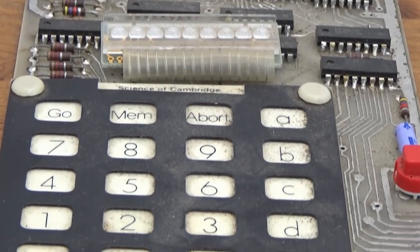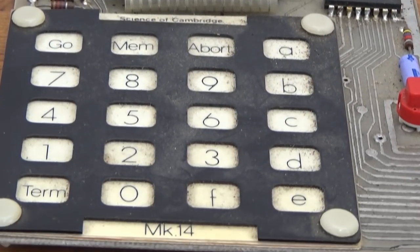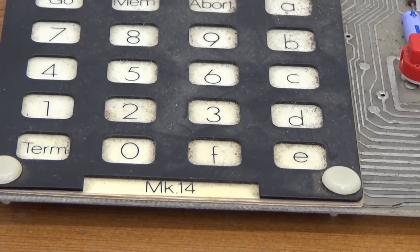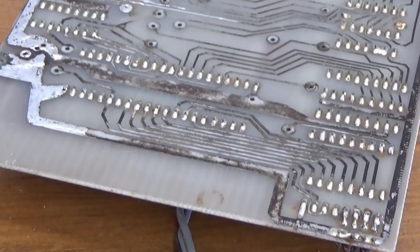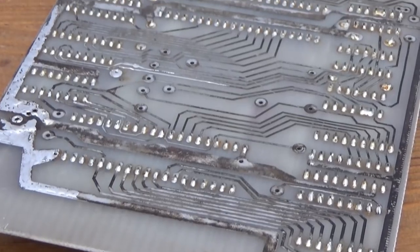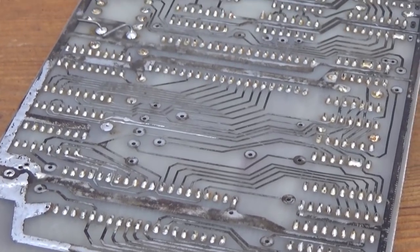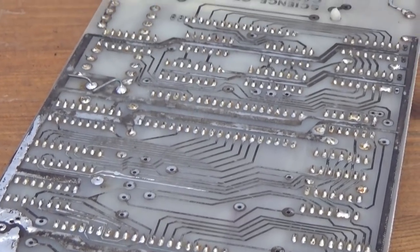The CPU is a National Semiconductor SCMP processor running at 4.4 megahertz. 256 bytes of RAM, 512 bytes of ROM, a handful of IO ports and a membrane touch keyboard.